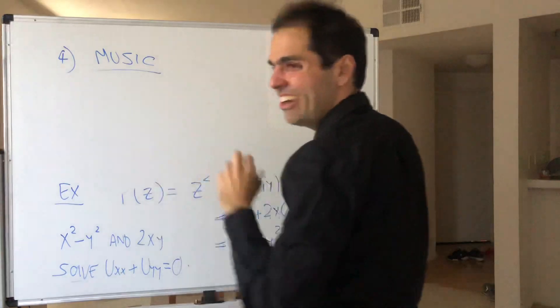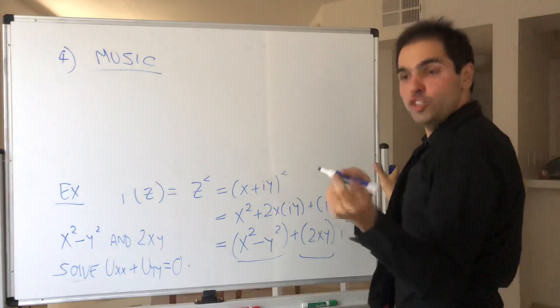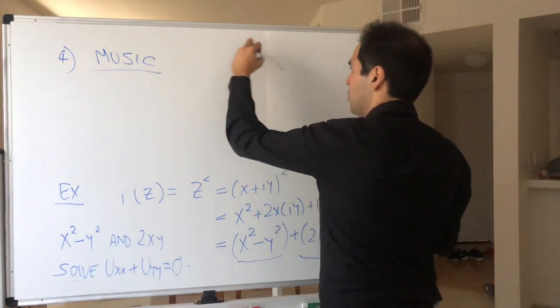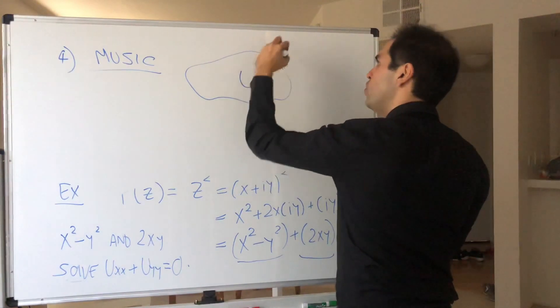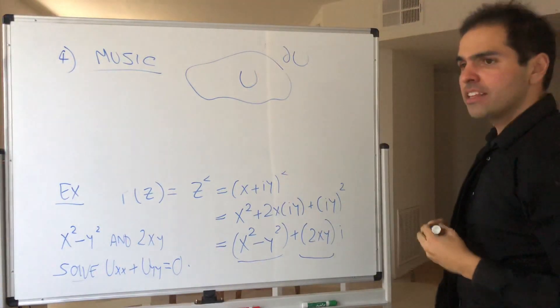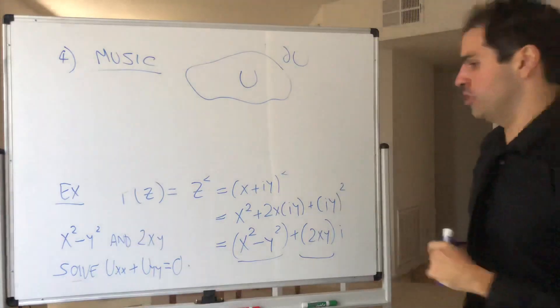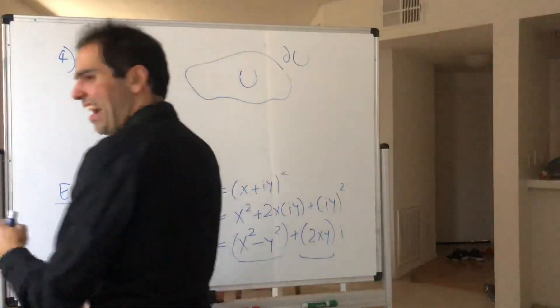In fact, math also arises in music. So you can use PDEs to study instruments. And this is really, really cool, I have to tell you. So let u be the surface of a drum. So this is u and this is the boundary of u. And let lambda be a real number, lambda as in eigenvalue.